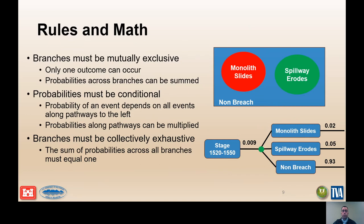For the previous example, breach can occur by monolith sliding or spillway erosion, or breach does not occur. This encompasses all possible events as shown in the Venn diagram. The sum of the probabilities represented by the three shaded areas equals one. This is also illustrated by the excerpt from the overall event tree for the node with a stage between elevation 1520 and 1550. The sum of the probabilities across all branches equals one.